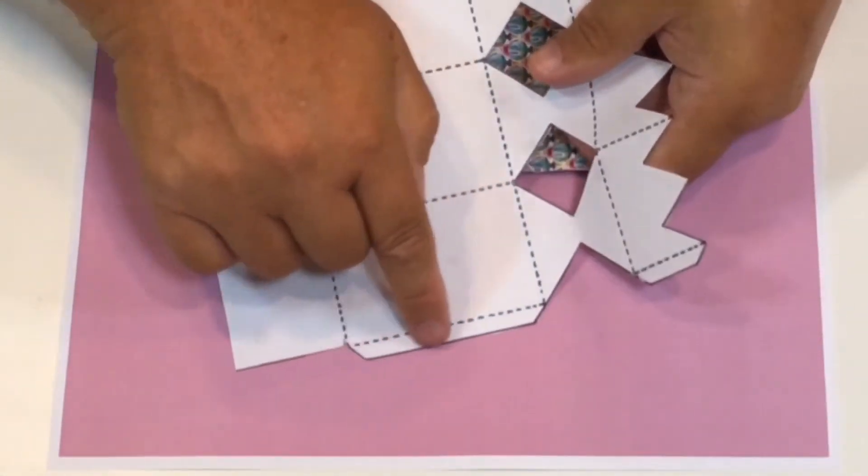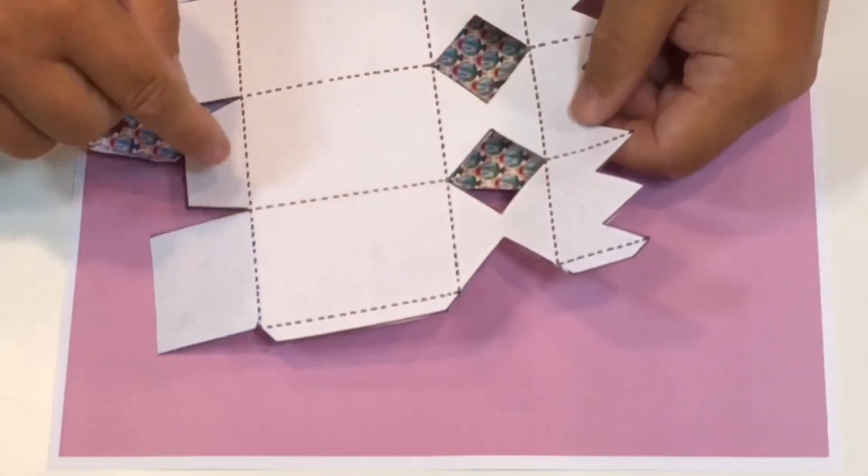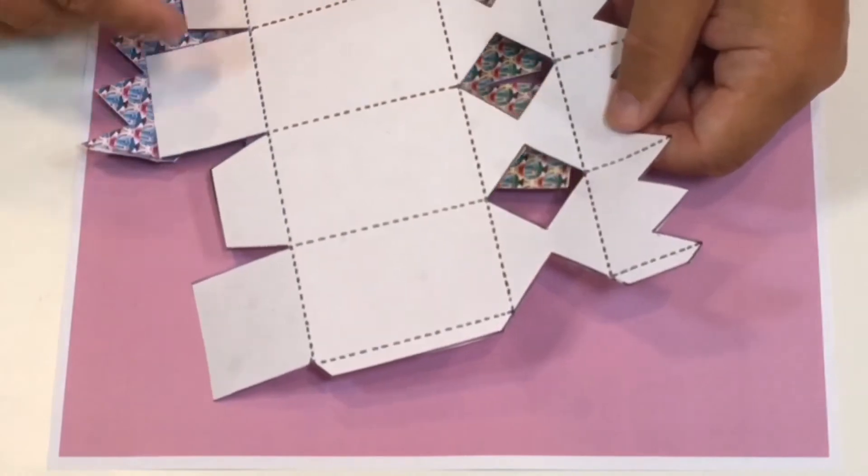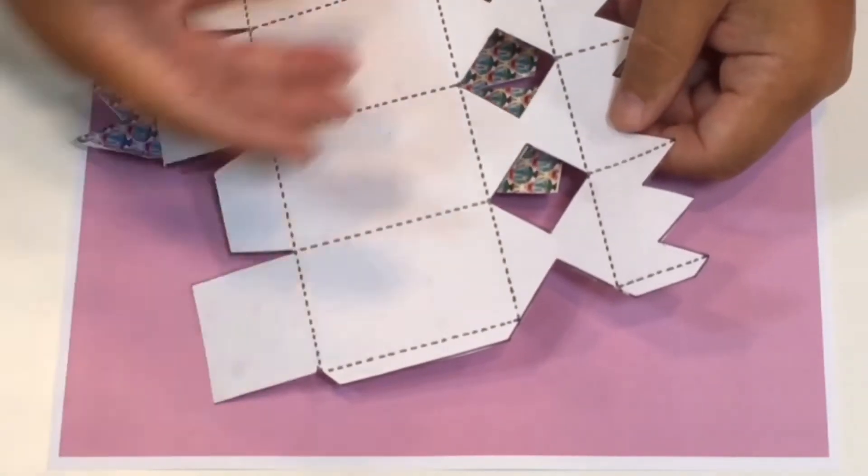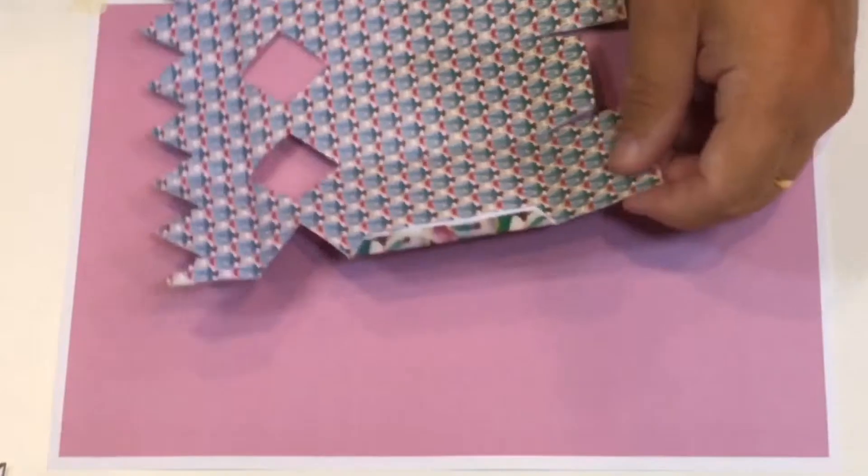There you go, that little section there, that little section there. That's where you're going to glue it. You can glue the base if you want to, but you can also just fold it in.